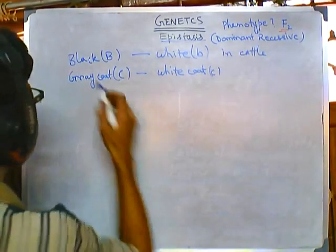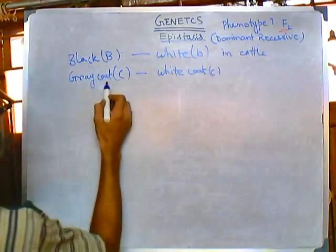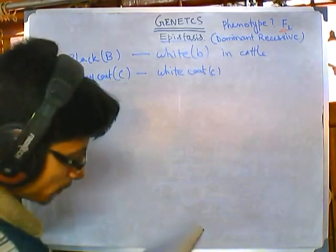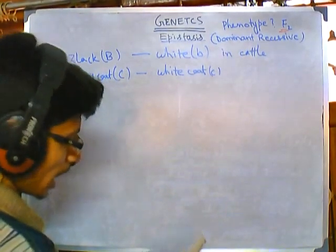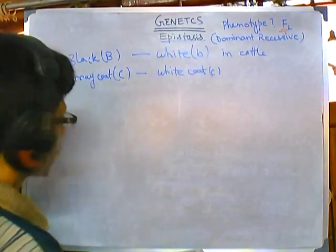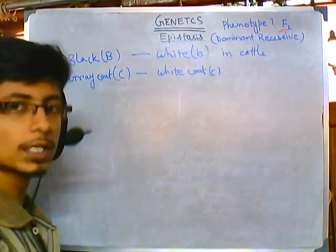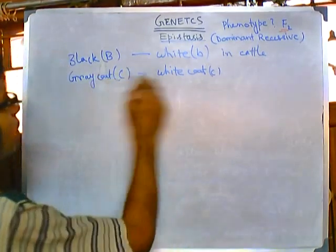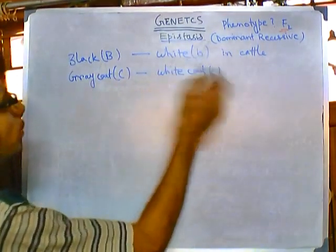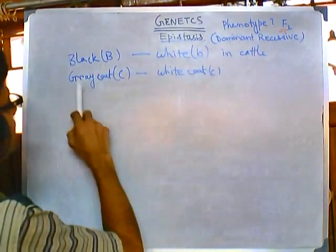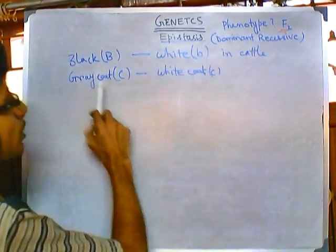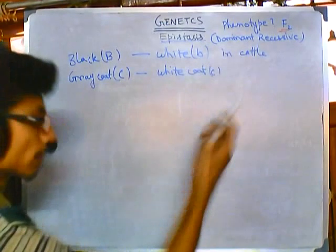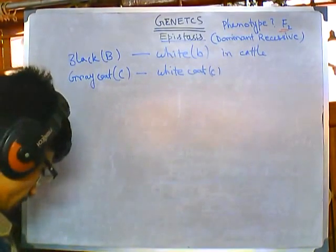Both genes B and C are responsible for the coat color of the cattle. Caps B gives black coat color, small b gives white coat color. Caps C gives gray coat color, small c gives white coat color.